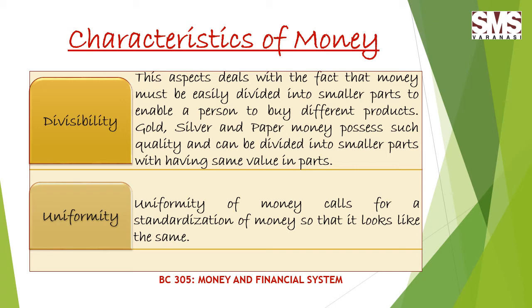The next characteristic is uniformity. Uniformity of money calls for a standardization of money so that it looks the same. The material used in money should be of the same quality. All coins should be of the same weight, shape and size. Paper money of different denominations should be of the same quality, same design and same size.